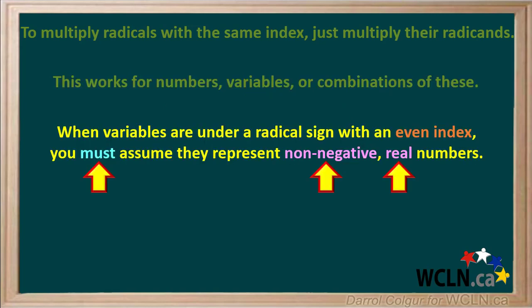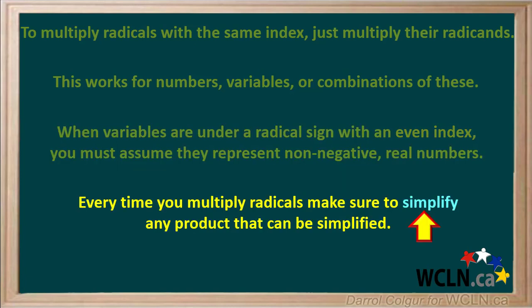Just one thing about variables under a radical sign: if variables are under a radical sign with an even index, you must assume they represent non-negative real numbers. Another important thing — every time you multiply radicals, make sure to simplify any product that can be simplified.